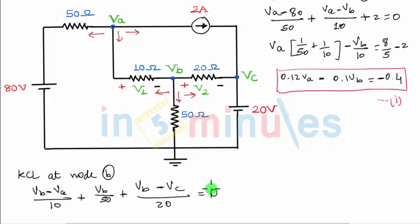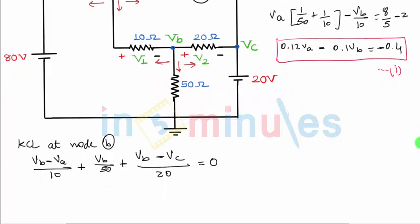These are three currents added. This will be equal to zero and once again if we simplify this we get first there's a term for VA. It's minus VA by 10. VB common, the constant terms will be 1 upon 10 plus 1 upon 50 plus 1 upon 20 and third term is minus VC upon 20 equal to zero.